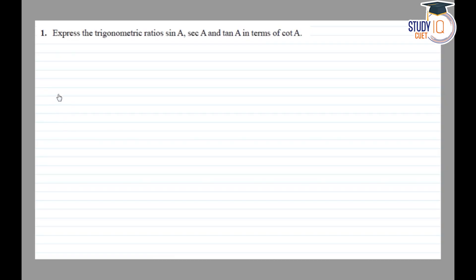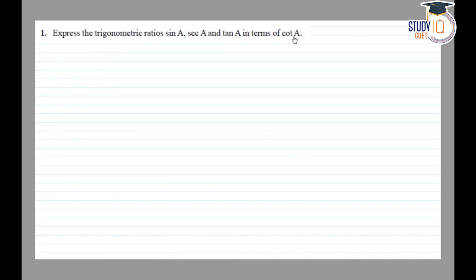Class 10 NCERT Chapter 8, Exercise 8.4, Question Number 1: Express the trigonometric ratios sin A, sec A, and tan A in terms of cot A.